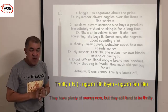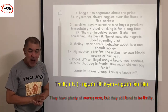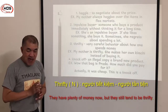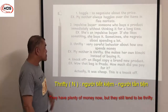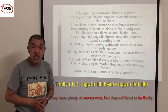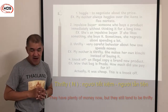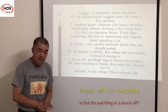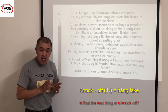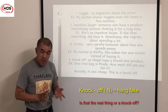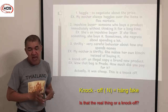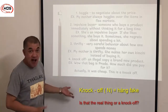Number three: thrifty — very careful behavior about how one spends money. Example: My mother is thrifty; she makes her own kimchi instead of buying it. Number four: knock off — an illegal copy of a brand-name product. Example: Wow, that bag is nice. How much did you pay for it? Actually, it was cheap — this is a knock off.